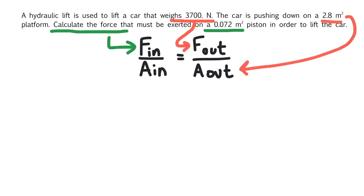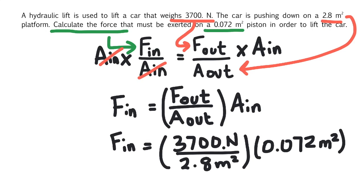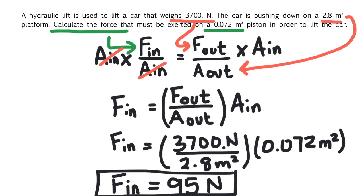We need to rearrange the equation to solve for input force. We can multiply both sides by input area. That cancels input area on this side and moves it over to the other side. Now plug everything into the equation. When we solve, we get 95 Newtons. So it requires an input force of 95 Newtons to lift the car.